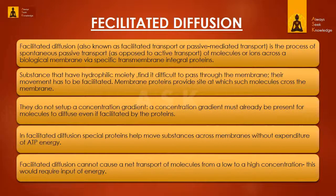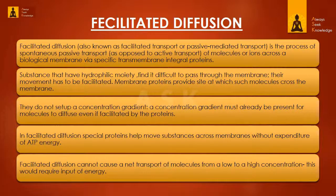Membrane proteins provide sites at which such molecules cross the membrane. They do not set up a concentration gradient - a concentration gradient must already be present for molecules to diffuse, even if facilitated by the proteins. In facilitated diffusion, special proteins help move substances across membranes without expenditure of ATP energy. Facilitated diffusion cannot cause a net transport of molecules from a low to a high concentration; this would require input of energy.